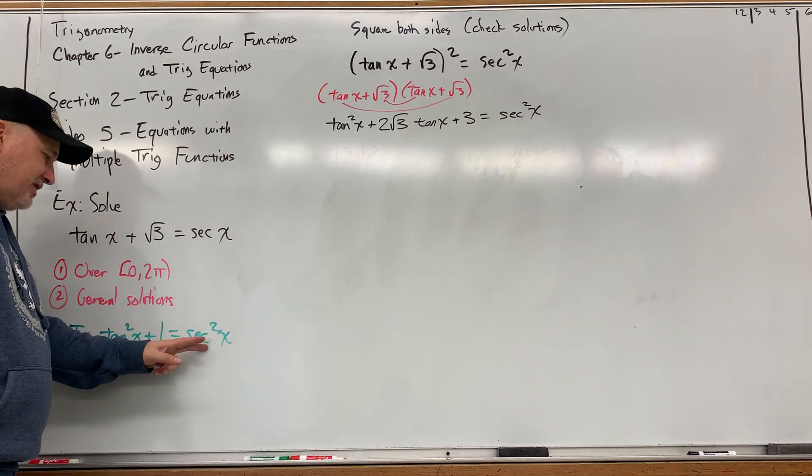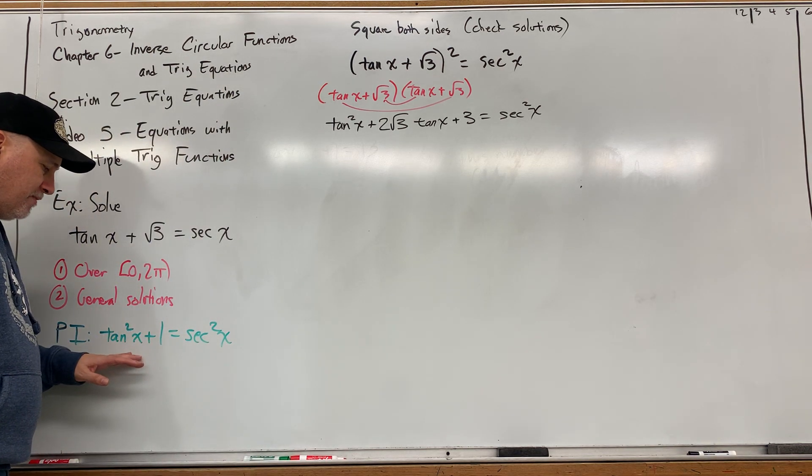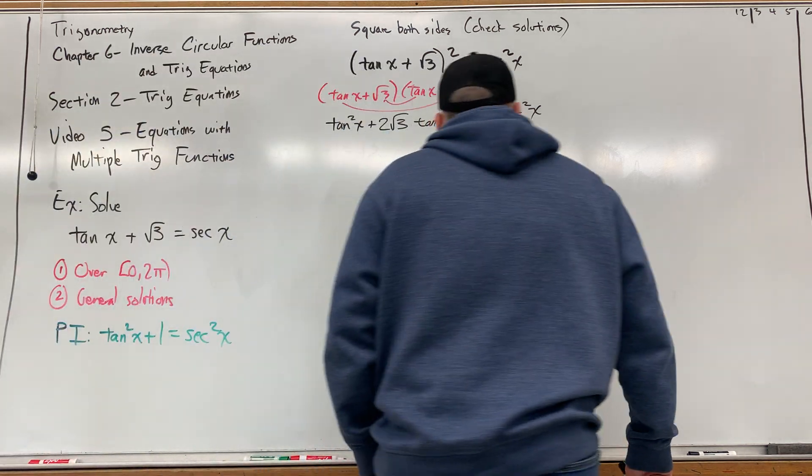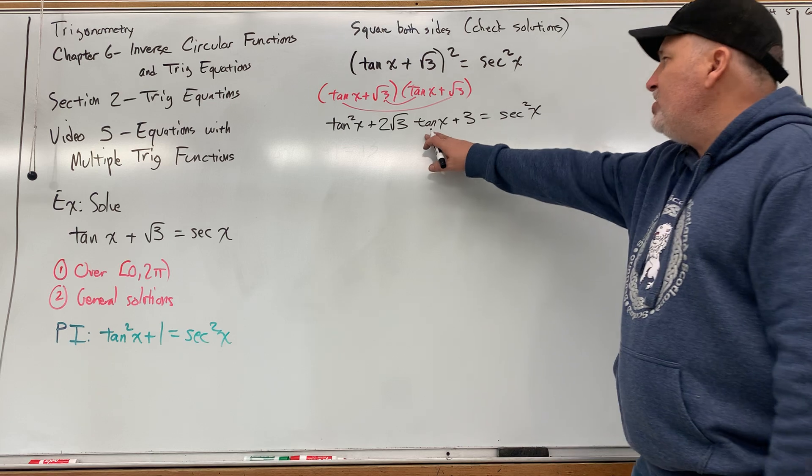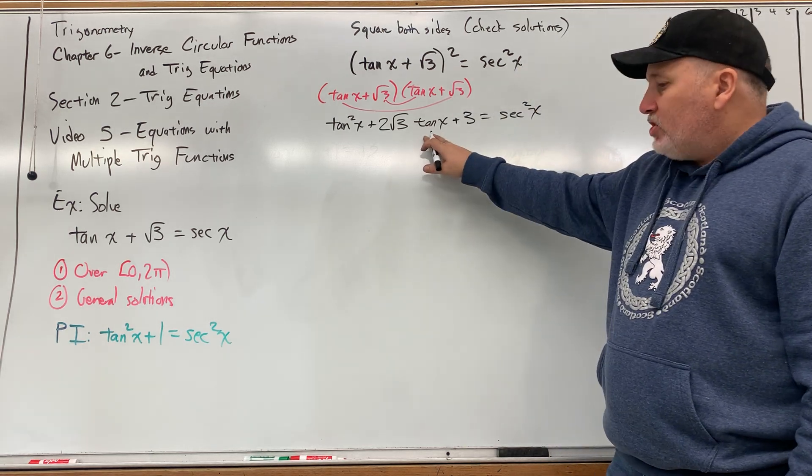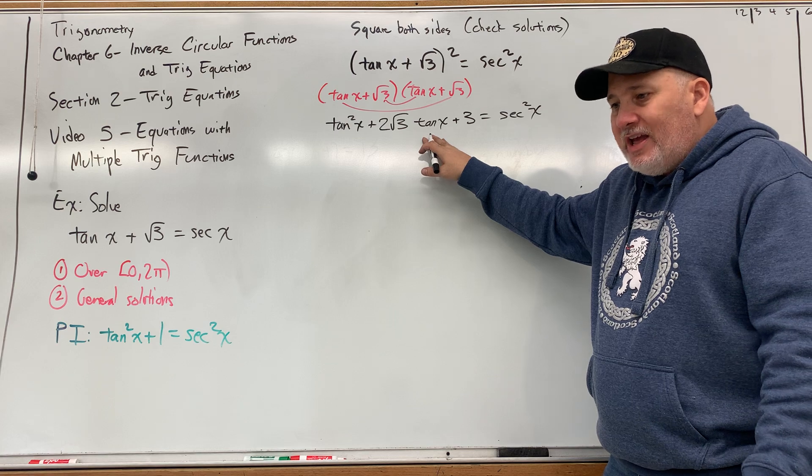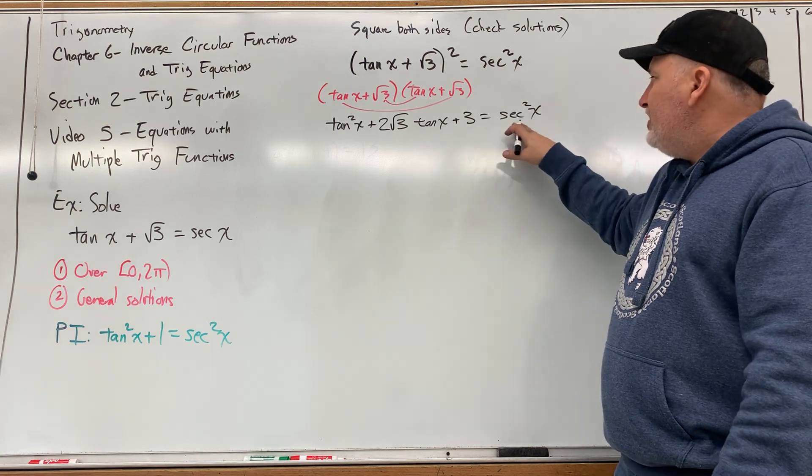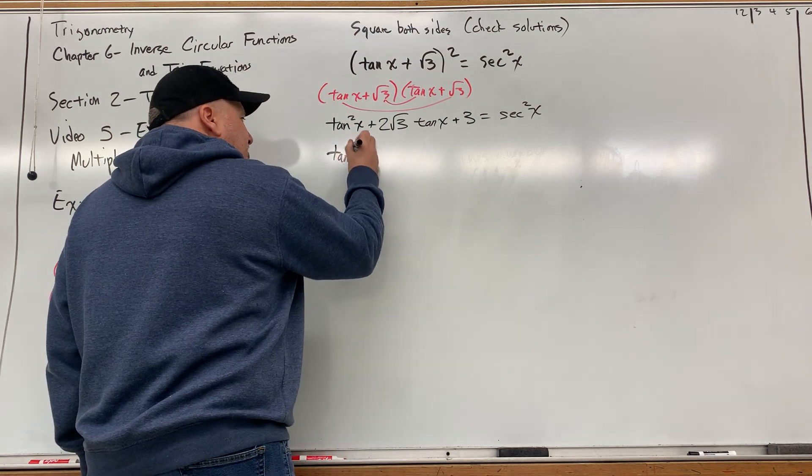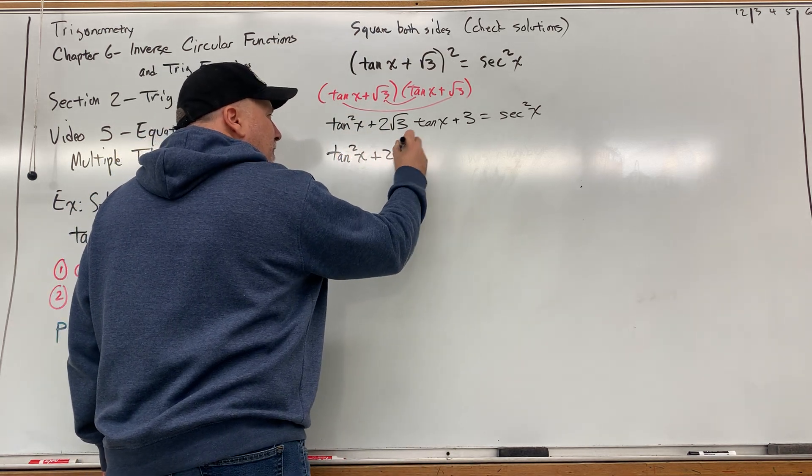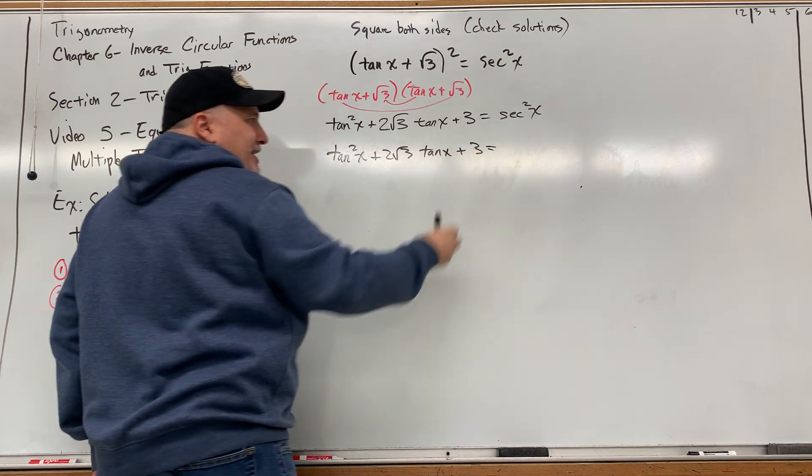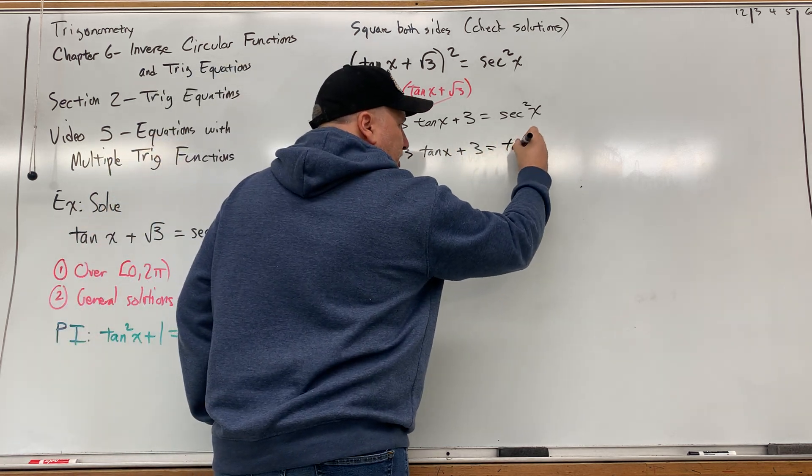We can either replace secant squared with tangent squared plus 1, or we can replace tangent squared with secant squared minus 1. Which one do I want to do? Well, I'm stuck with this tangent in the middle. It's not going to change using the Pythagorean identity, so that means I want to leave the tangent and get all tangents. So I'm going to change the secant squared to tangent squared x plus 1. Left side stays the same. Right side secant squared becomes tangent squared x plus 1.